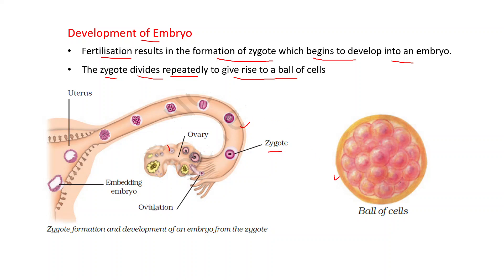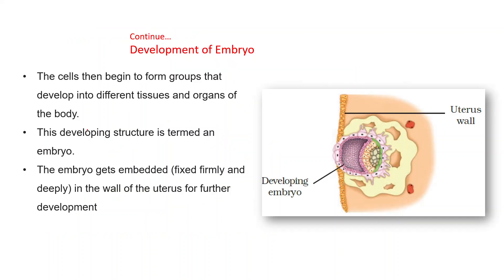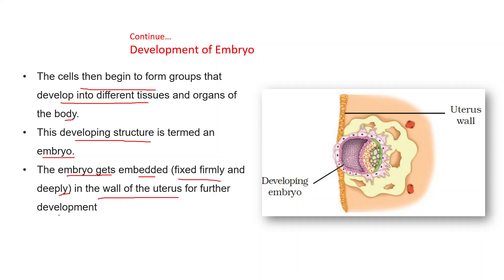This ball of cells repeatedly increases and finally moves to the uterus. The cells begin to form groups, developing into different tissues and organs of the body. This developing structure is termed an embryo. The embryo gets embedded — meaning it fits firmly and deeply — in the wall of the uterus for further development.